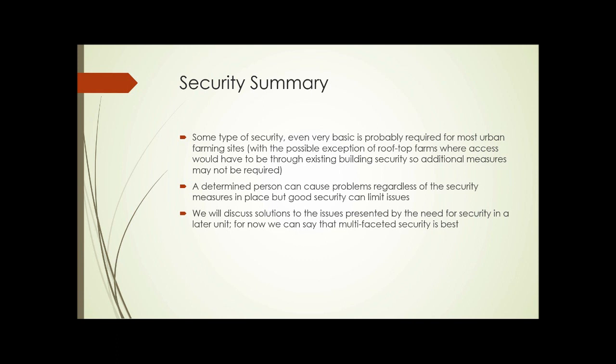In summary, some type of security — even very basic security — is probably required for most urban farming sites, with the possible exception of rooftop farms where access would have to be through the building and existing security. A determined person can still cause problems regardless of security measures in place, but good security can limit issues. We'll discuss some solutions in a later unit, but one thing we can say now is that multifaceted security is best — something that combines multiple things, such as fencing and an alarm system, or signage and lighting. Combinations typically work best. That ends part one of this unit's presentation.